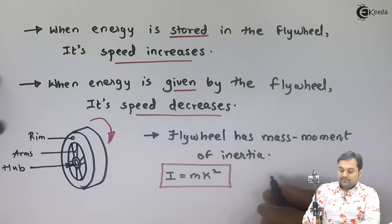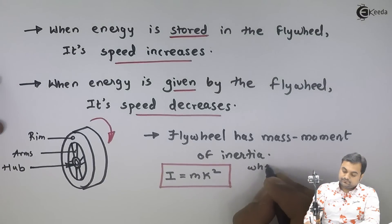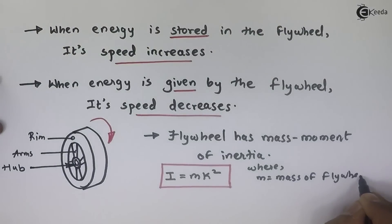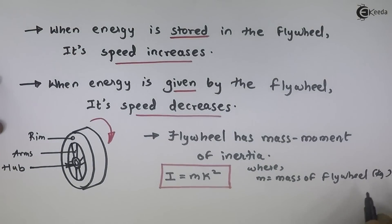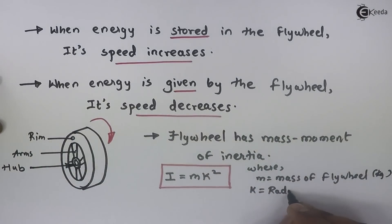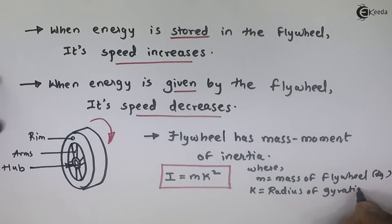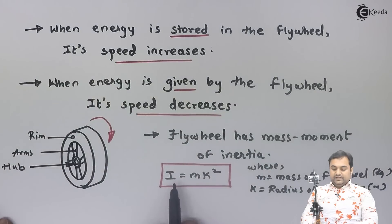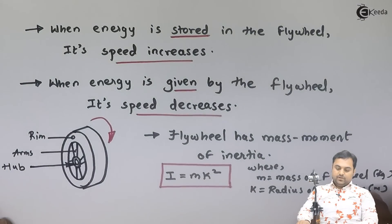Where m is the mass of the flywheel in kilograms, and K is the radius of gyration in meters. So the formula for mass moment of inertia of a flywheel is I equals M K squared.